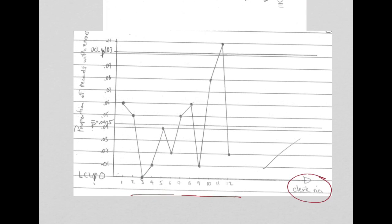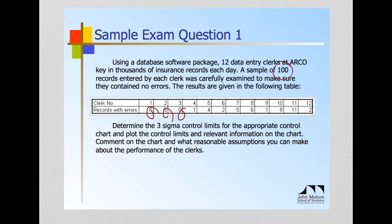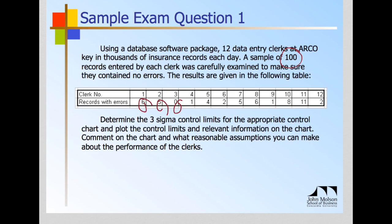And you can see right away, that clearly this sample is out of limit, out of control. This clerk number 11, out of control. And this one, number 3, is right on the limit. Okay, so there's no question that this process is out of control. And there's a couple of things we can conclude. So if we go back to the question, the question was stating, comment on the chart and what reasonable assumptions you can make about the performance of the clerks. Okay, so remember the context of the problem.